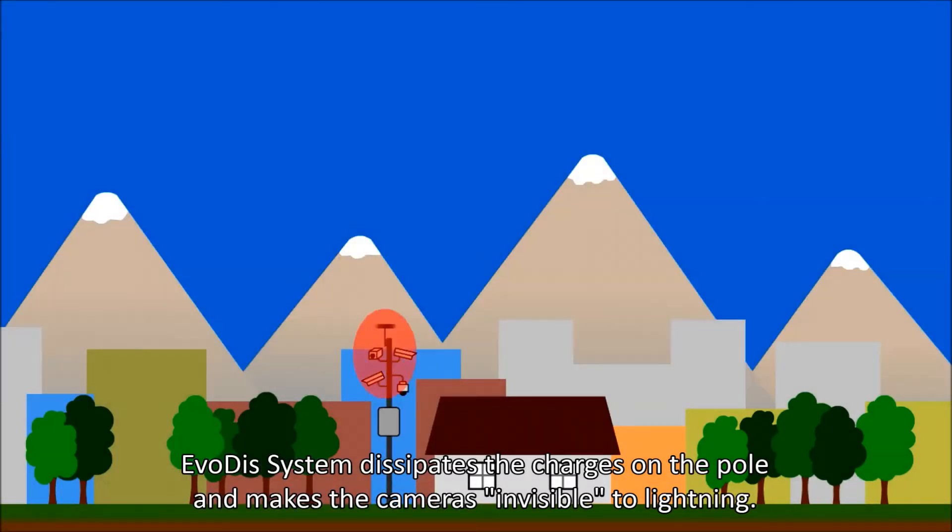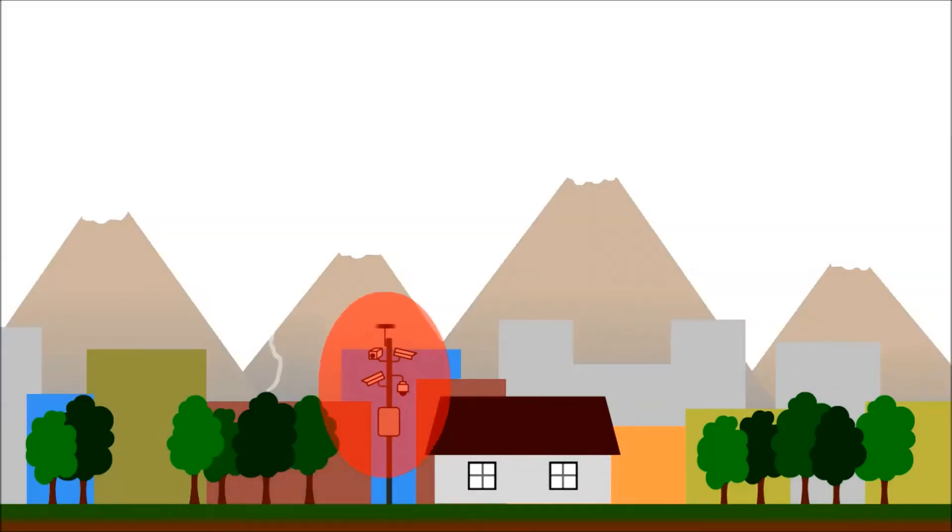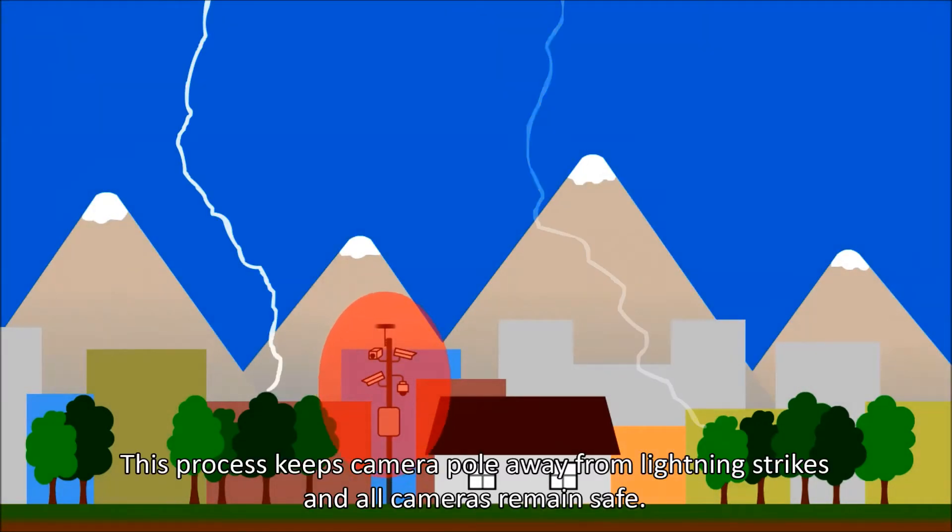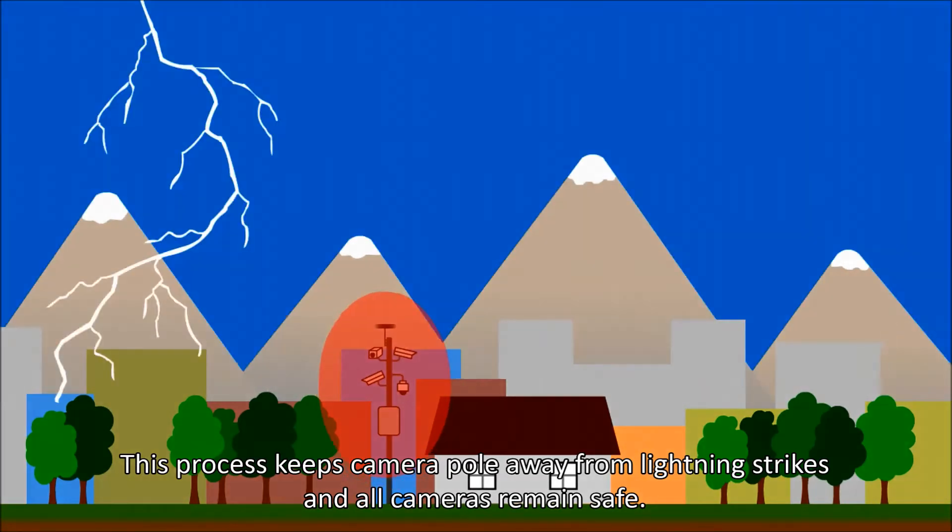Evodis System dissipates the charge on the pole and makes the cameras invisible to lightning. This process keeps camera pole away from lightning strikes and all cameras remain safe.